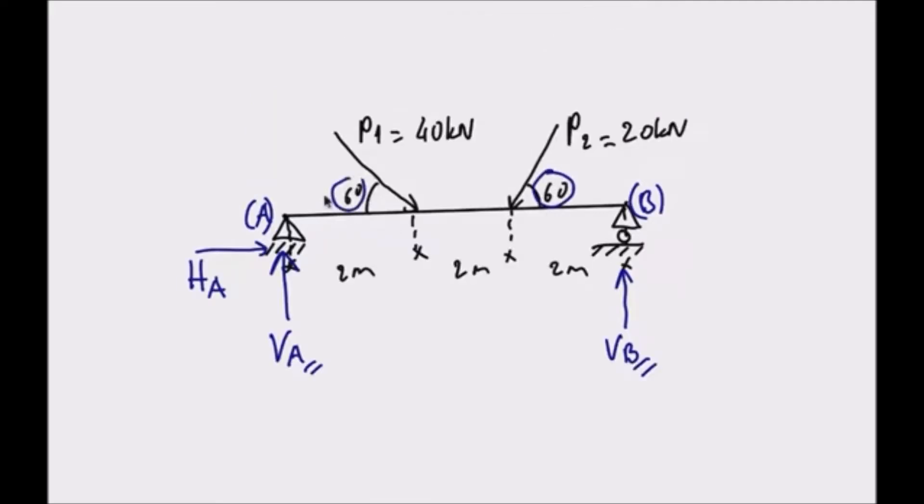We see 60 degree angles. We need to determine the forces before equilibrium equations. P2 is 20 kN. Vertical: P2 times sin 60. Horizontal: P2 times cos 60. Likewise, P1 is 40 kN. Vertical: P1 times sin 60. Horizontal: P1 times cos 60.